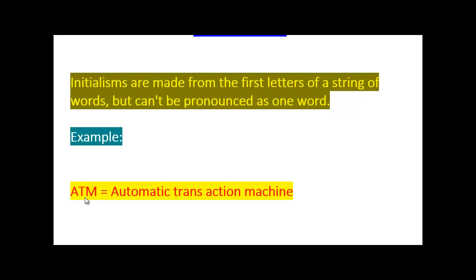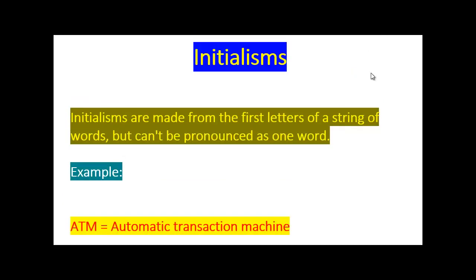Example: ATM, Automatic Transaction Machine. Initialism is different from an acronym. With an acronym, like North Atlantic Treaty Organization, you say NATO as one word. But with an initialism, you pronounce the letters A-T-M — you don't say ATOM, you say A-T-M. That's the difference between acronym and initialism.